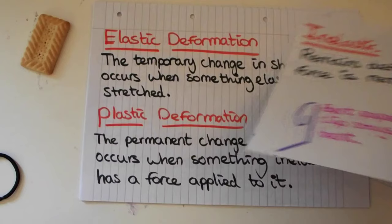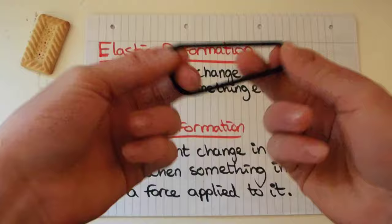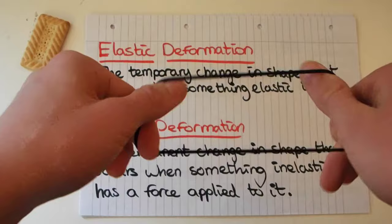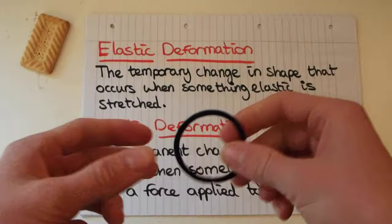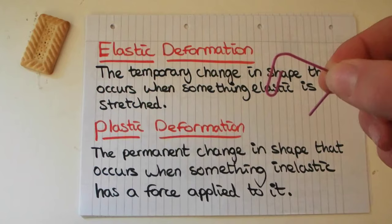The paper clip doesn't do that — it just stays deformed. So we've got two types of deformation. Deformation is just a change in shape away from what it should be. When I pull this hairband it goes from being a ring to being stretched out — that's a temporary change in shape because it's elastic. When something inelastic gets deformed, the change is permanent.